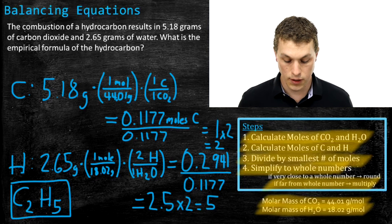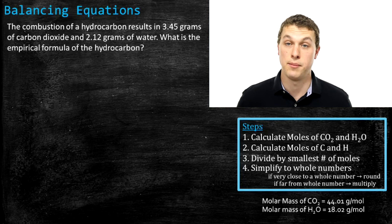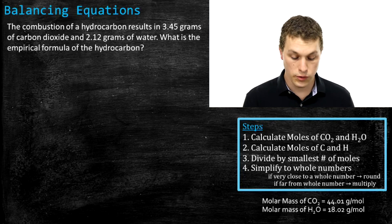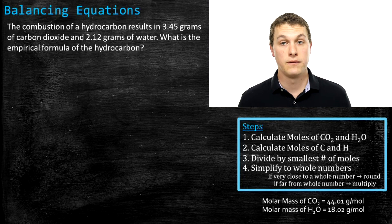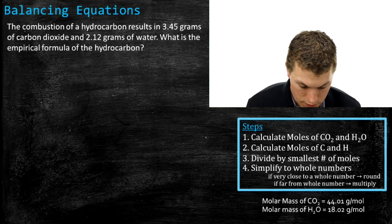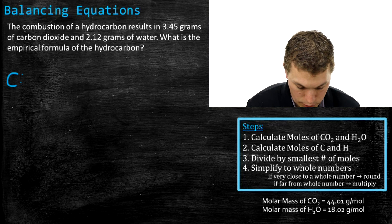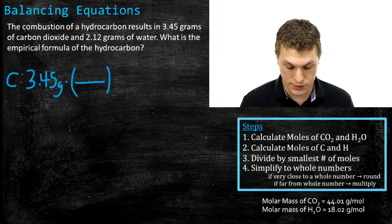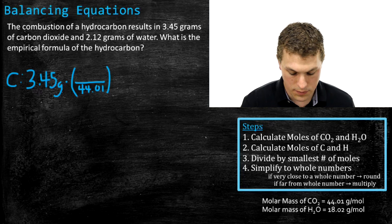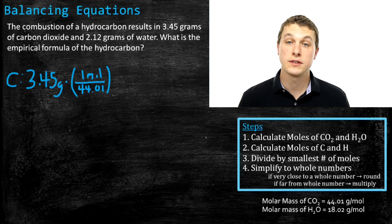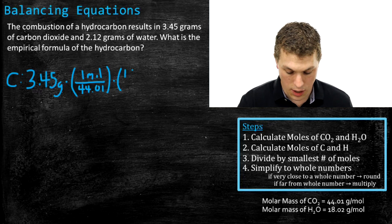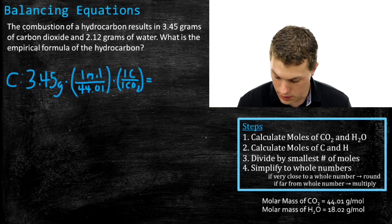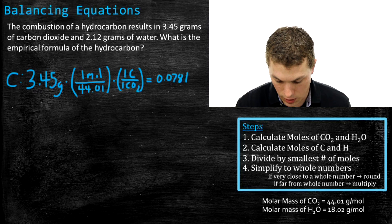Let's go through one more example. This problem is the same except the amounts have changed: we've produced 3.45 grams of carbon dioxide and 2.12 grams of water. We start by calculating the moles of each. For carbon: 3.45 grams of CO2, divided by 44.01 grams per mole, then multiplied by one carbon per CO2 molecule, giving us 0.0784 moles of carbon.